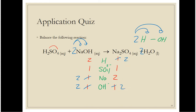To fix my hydrogen and hydroxide, I'm going to add a two in front of the water. If I add a two in front of the water, it applies to both this hydrogen and to the hydroxide. So I have two and two, and it's balanced. Sulfuric acid reacts with two sodium hydroxides to produce one sodium sulfate and two waters.